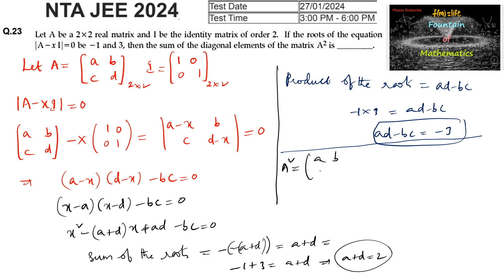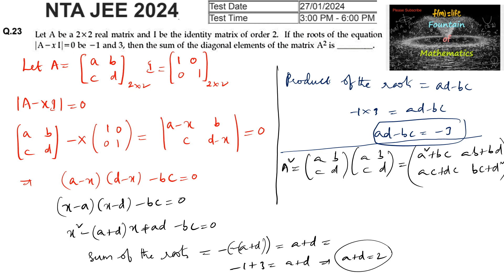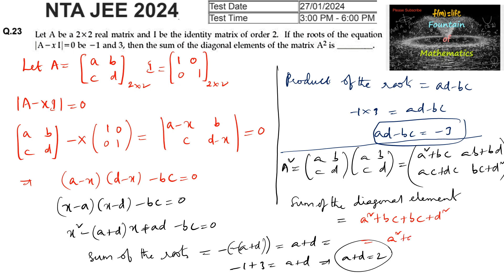A² = [[a, b], [c, d]] × [[a, b], [c, d]] = [[a²+bc, ab+bd], [ac+dc, bc+d²]]. The sum of the diagonal elements of A² is (a²+bc) + (bc+d²) = a² + d² + 2bc.